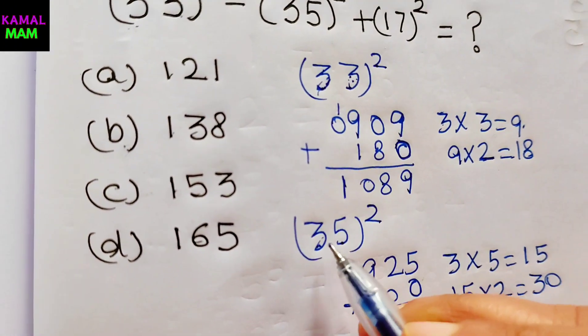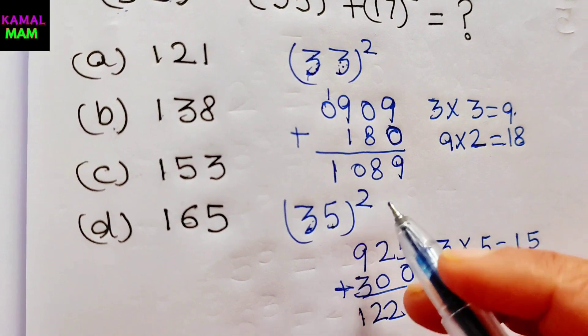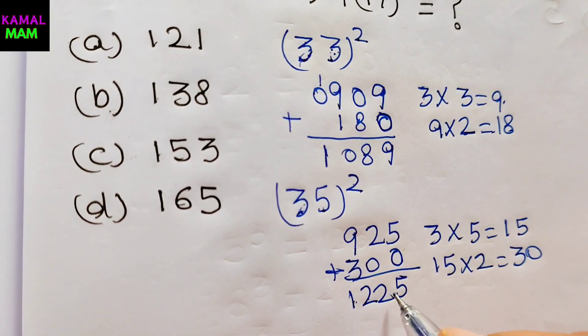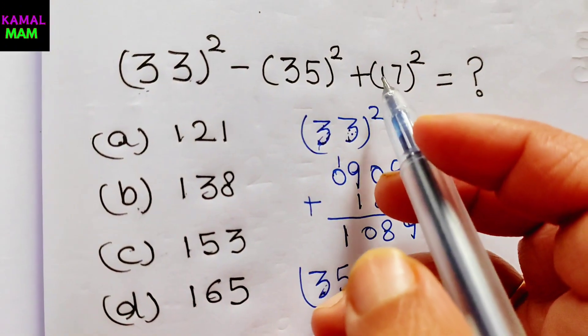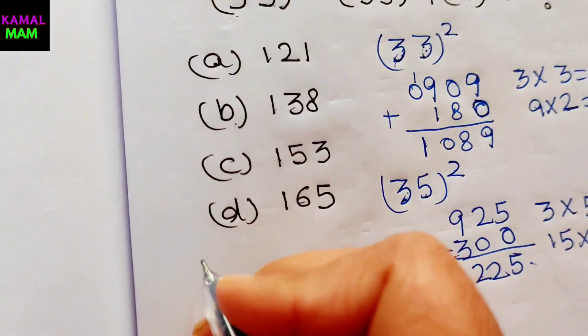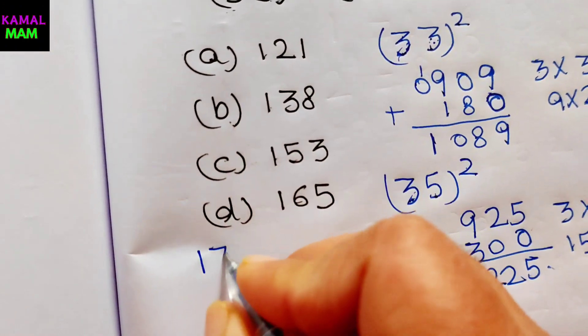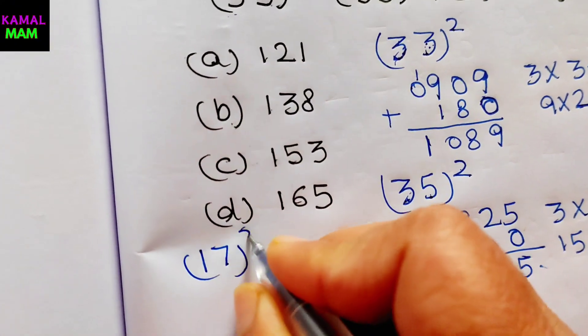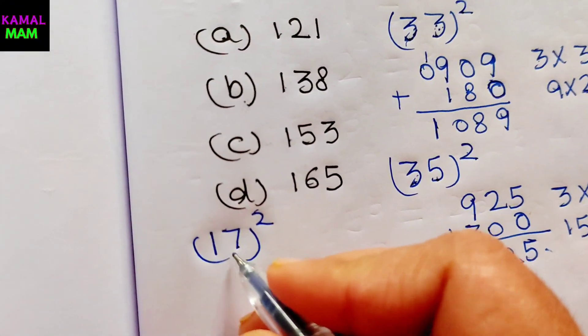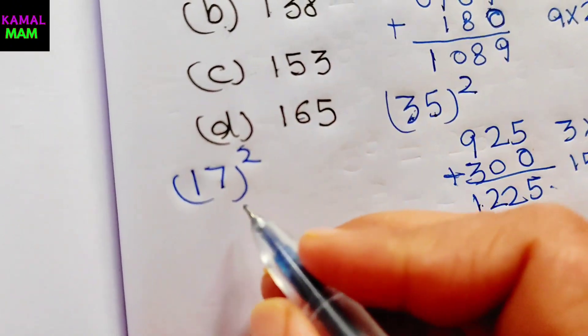So for 35 raised to power 2 we get 1225. Let's check for 17 raised to power 2. Here it's 17 raised to power 2. Just take out for that.